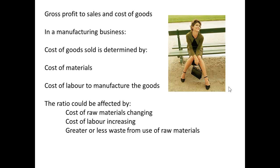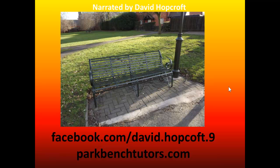In a manufacturing business, we need to consider something else — the cost of goods sold is determined by two different factors: the cost of materials, and the cost of labour to manufacture the goods. So the ratio could have been affected by cost of raw materials changing, cost of labour increasing, or it could be a result of greater or less waste from the use of raw materials in the processes. That ends our first short podcast on ratios, brought to you by Parkbench Tutors and narrated by David Hopcroft. Thank you for watching and for listening.